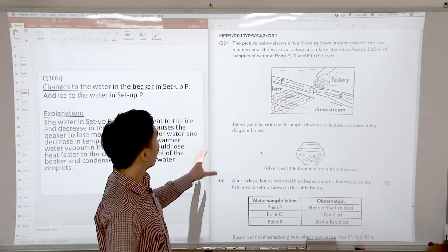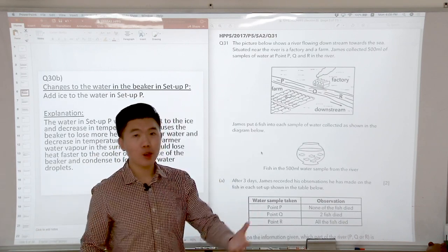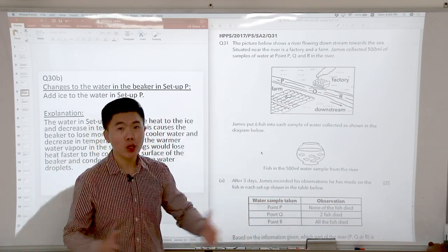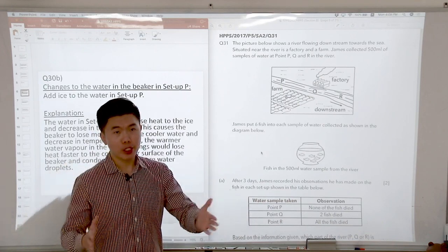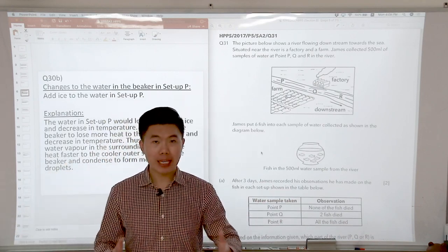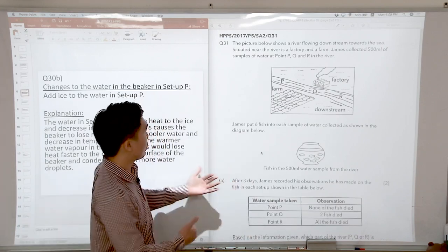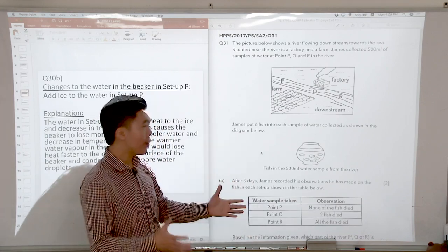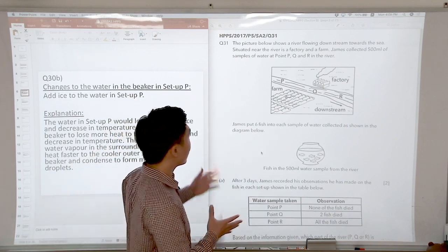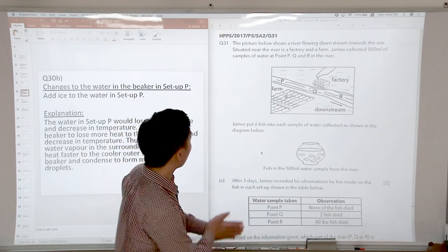Question 31 may be quite confusing for some of you because question 31 is a man and environment question which is a topic which will only be taught in P6. However, Henry Park has decided to bring this topic down to the P5 level, so I will try my best to explain this to you in the simplest way possible. Let's look at the question first.